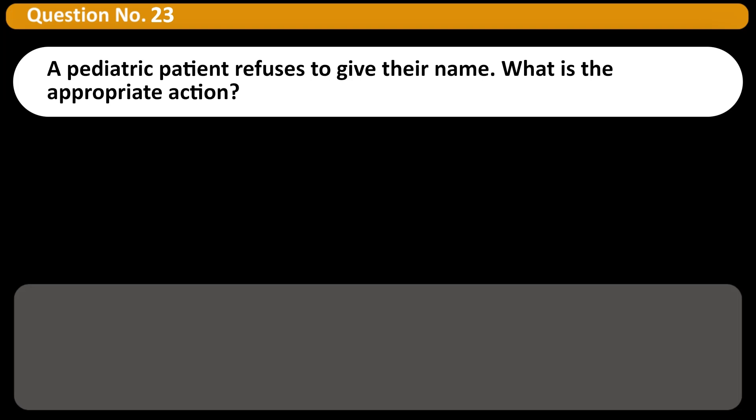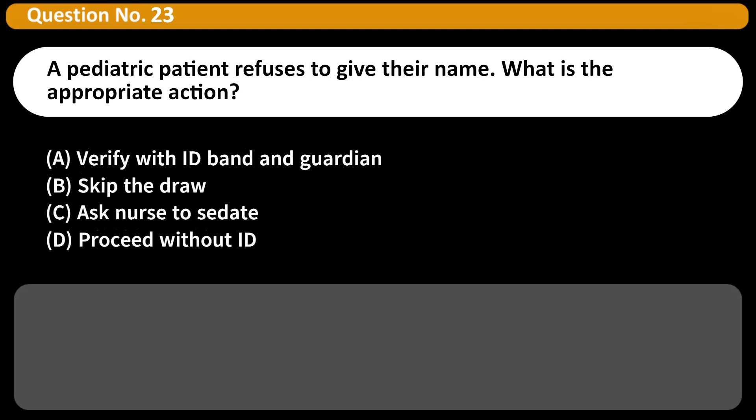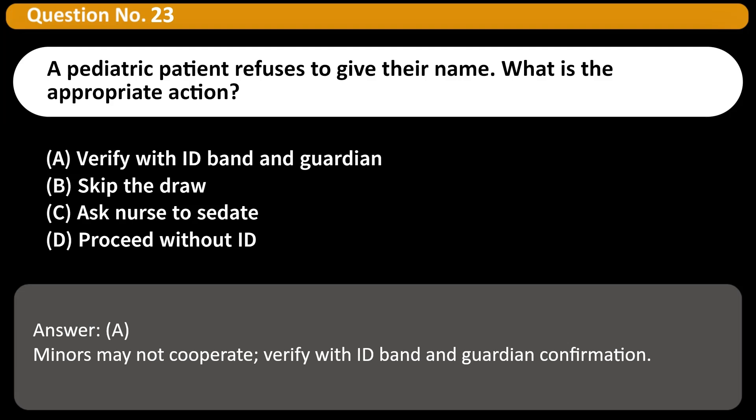A pediatric patient refuses to give their name. What is the appropriate action? A. Verify with ID band and guardian. B. Skip the draw. C. Ask nurse to sedate. D. Proceed without ID. Answer: A. Minors may not cooperate. Verify with ID band and guardian confirmation.